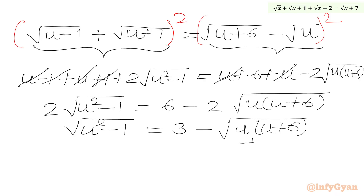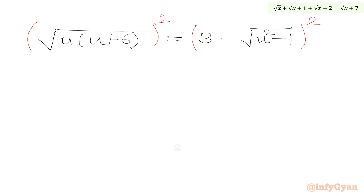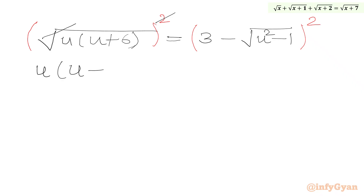Now I will take the negative term to the LHS and the LHS term to the RHS. So we can write: square root of u(u+6) plus square root of (u²-1) equals 3.